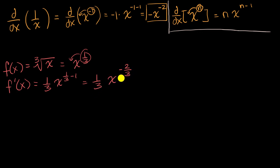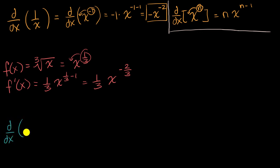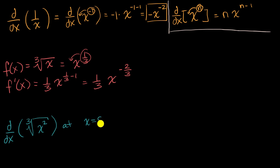Hopefully through these examples you're seeing that the power rule is incredibly powerful — you can tackle a far broader range of derivatives than you might have initially thought. Let's do another example, and I'll make this one really nice and hairy. Let's say we want to figure out the derivative with respect to x of the cube root of x squared. And actually, let's not just find the derivative — let's find the derivative at x equals eight.